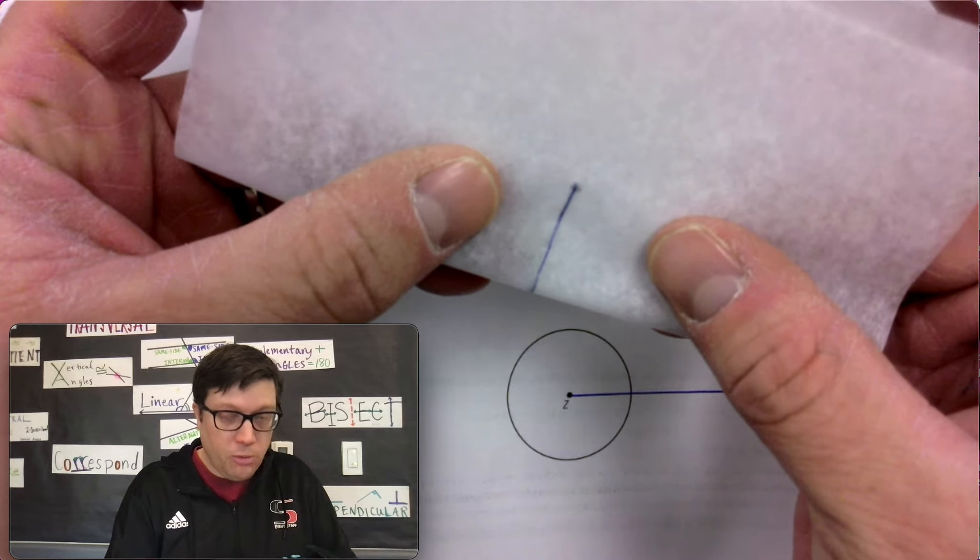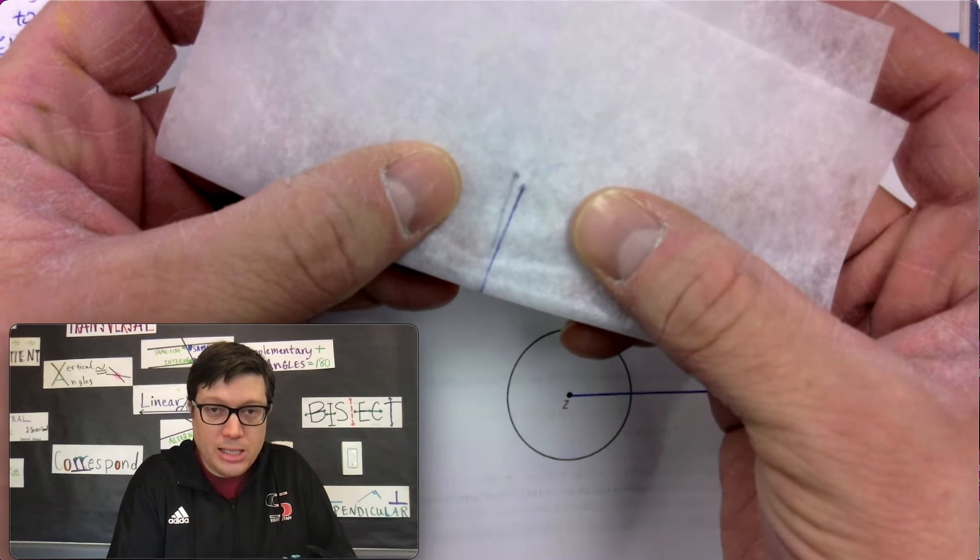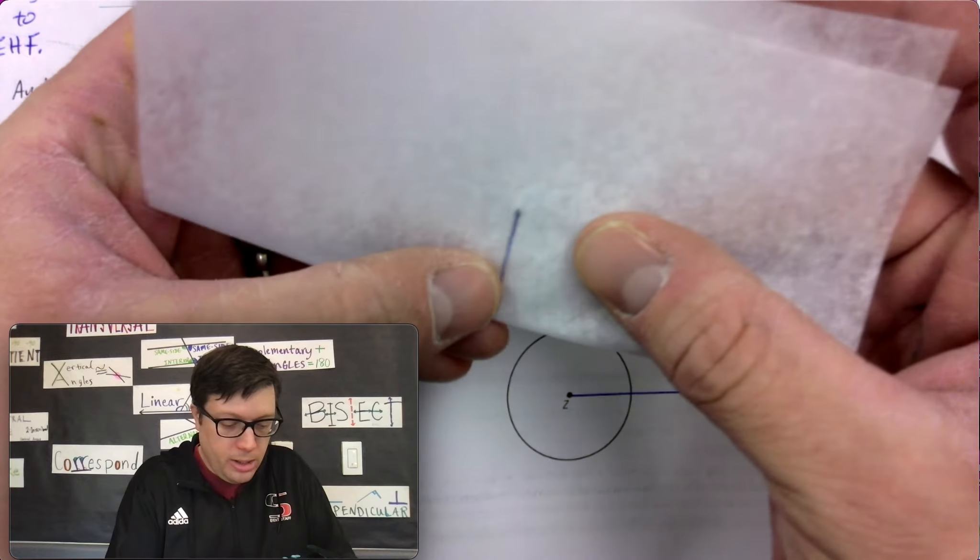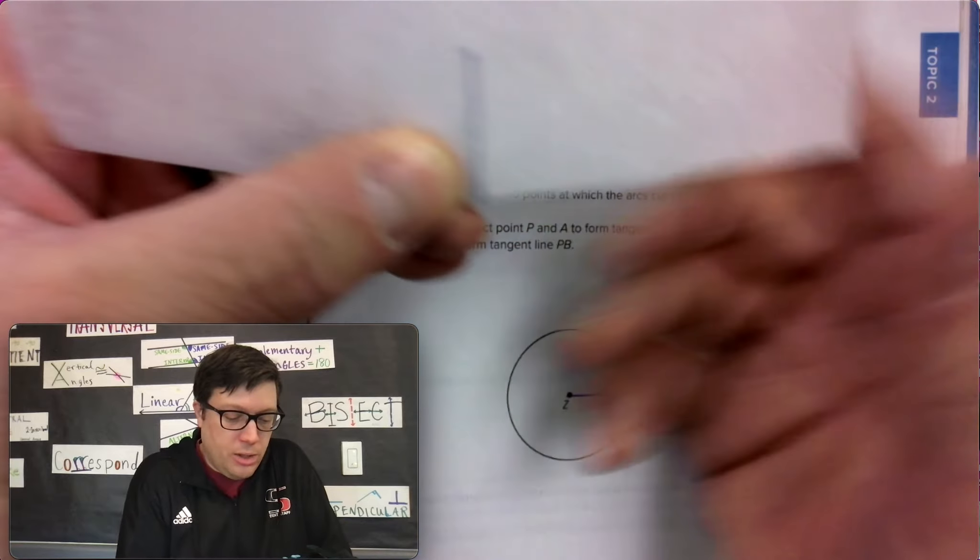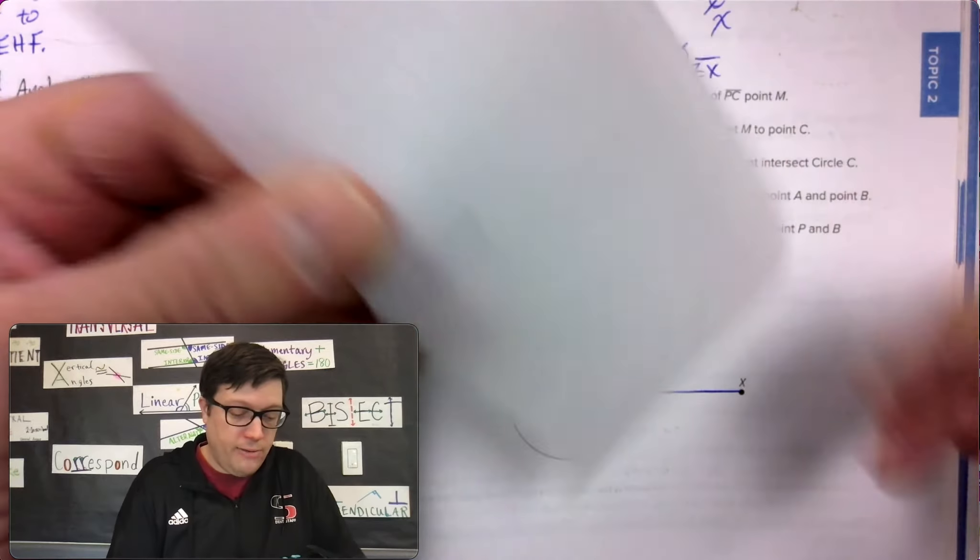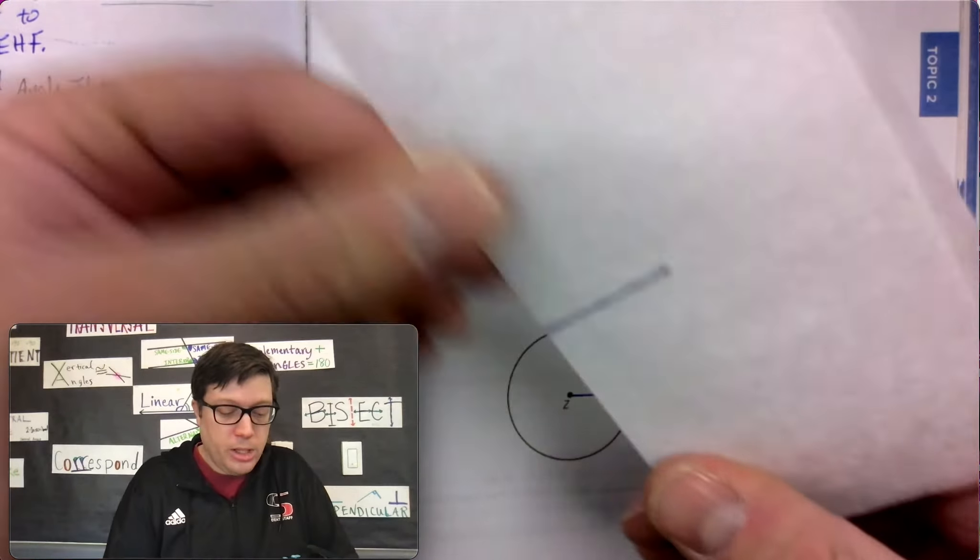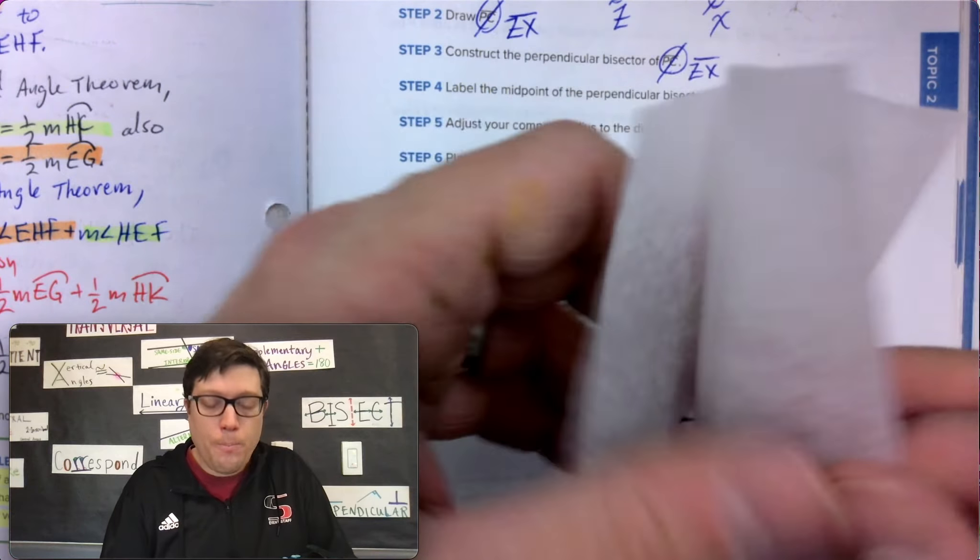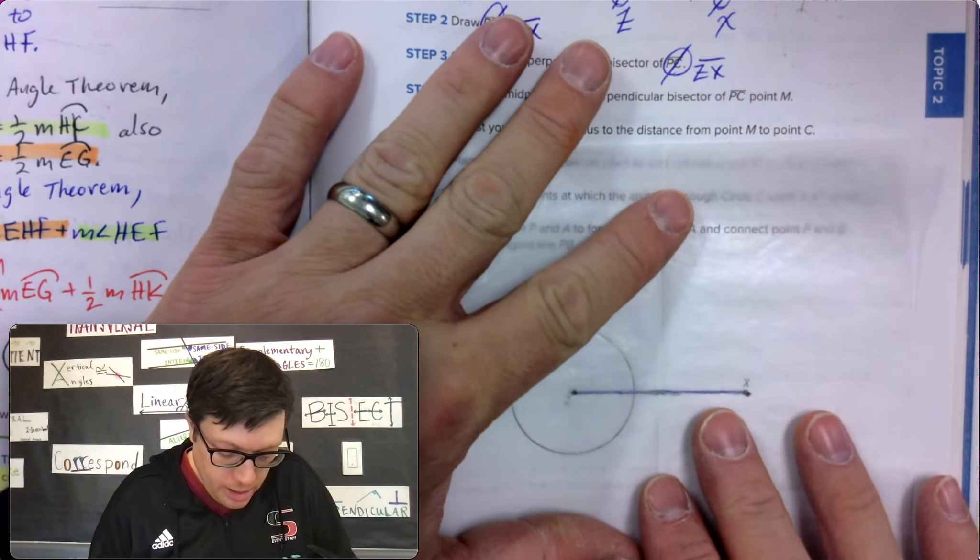But I can just take my tracing paper and fold it. And as long as I fold my dots carefully so that the dots actually line up and then make a sharp crease on the tracing paper. Make sure again, don't have an oops moment. Have your dots perfectly line up, sharp crease, open it up. And there you have it.